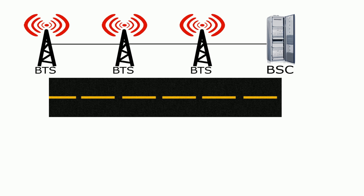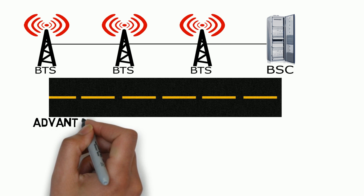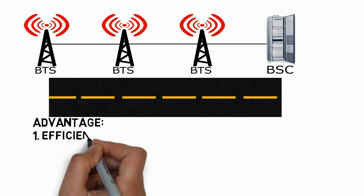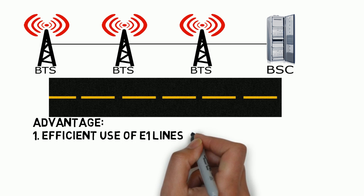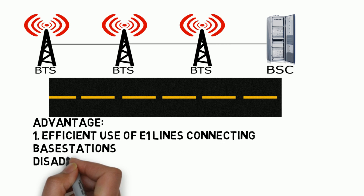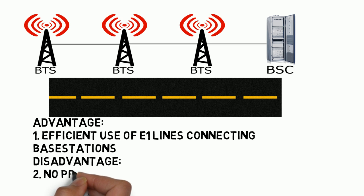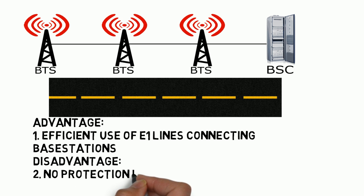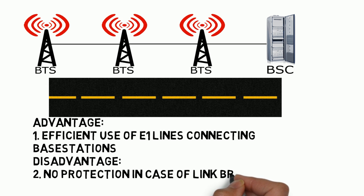The connections between the BSC and the BTS are made on E1 lines — when talking about American standards, this connection is on E1 lines, and similarly the connection between BTS and BTS is also on E1 lines. The advantage of this configuration is that it uses the channels in those E1s very efficiently. As a result, the number of required E1s is reduced, so in that respect this configuration is very cost effective as you require fewer E1s.